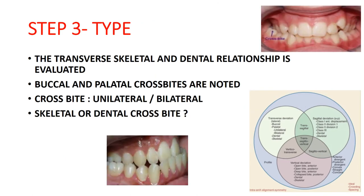The third step involves considering malocclusion in the transverse plane, represented by the smaller circle. The transverse skeletal and dental relationship is evaluated — specifically whether the patient has a buccal or palatal crossbite, whether it is unilateral or bilateral, and whether the crossbite is due to a skeletal or dental problem.